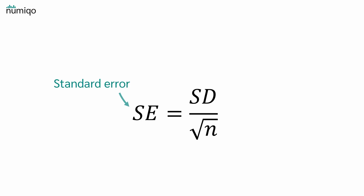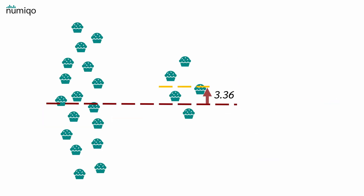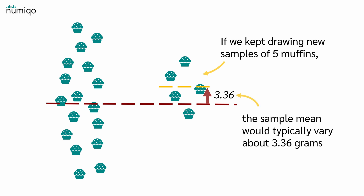But how can we calculate the standard error of the mean? The standard error of the mean can be calculated with this formula, where sd is the standard deviation and n is the sample size. In our example, the standard deviation is 7.5 and we weighed 5 muffins, so our sample size is 5. This gives us a standard error of 3.36. This standard error tells us, if we keep drawing new samples of 5 muffins, the sample mean would typically vary about 3.36 grams from the true average.